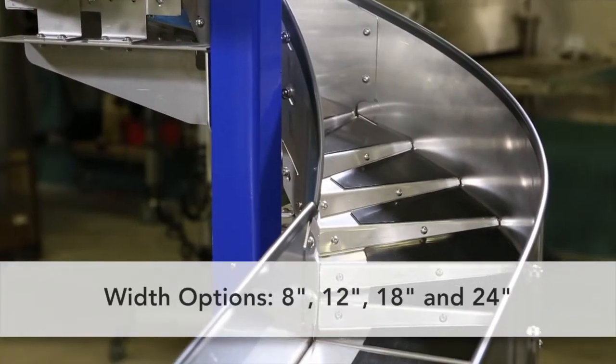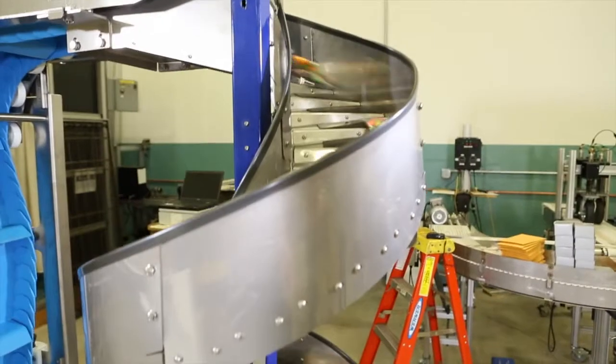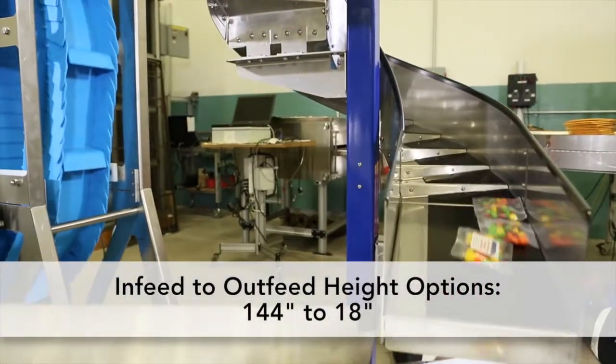Spiral chutes are available in widths of 8 inches, 12 inches, 18 inches, and 24 inches. In-feed to out-feed heights are available from 144 inches to 18 inches.